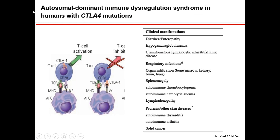CTLA-4 is an inhibitory molecule, so if you have a mutation in CTLA-4, the regulatory cell cannot work properly. This partly resembles IPEX, with defective regulatory T cells. These children present with enteropathy, low immunoglobulin levels, infections, and autoimmunity.